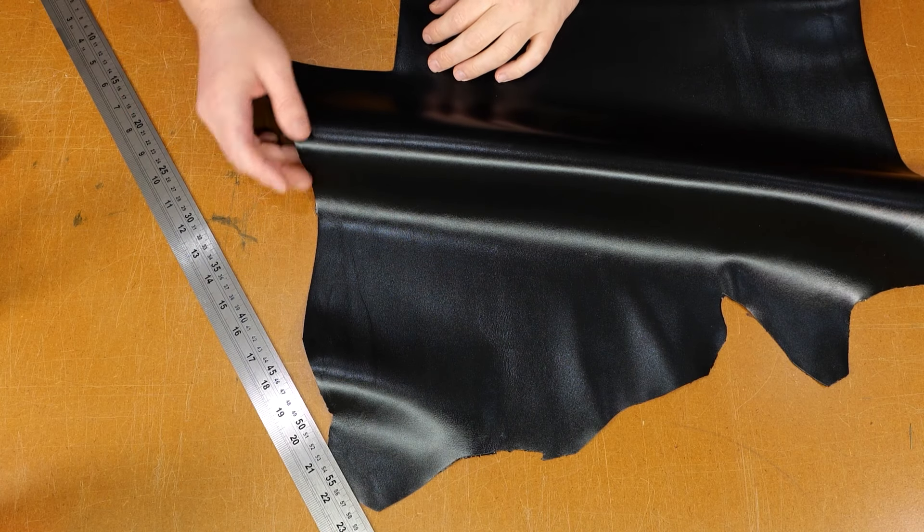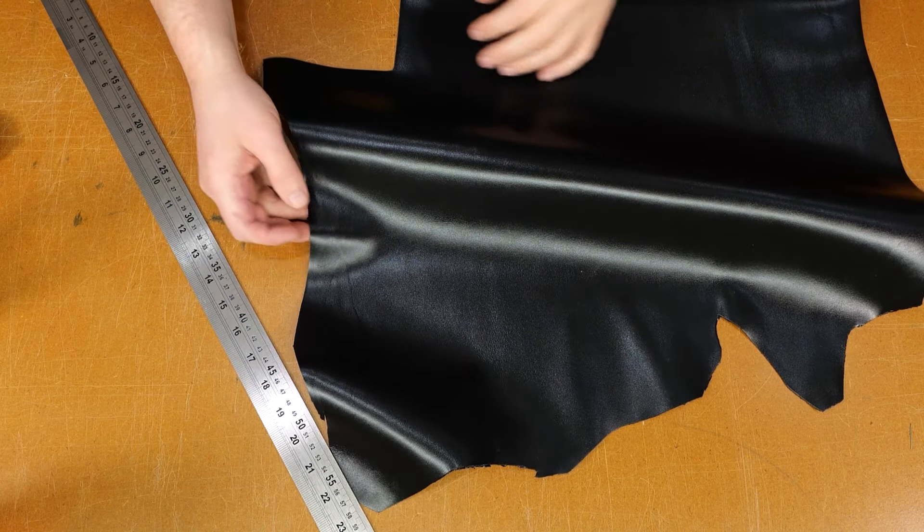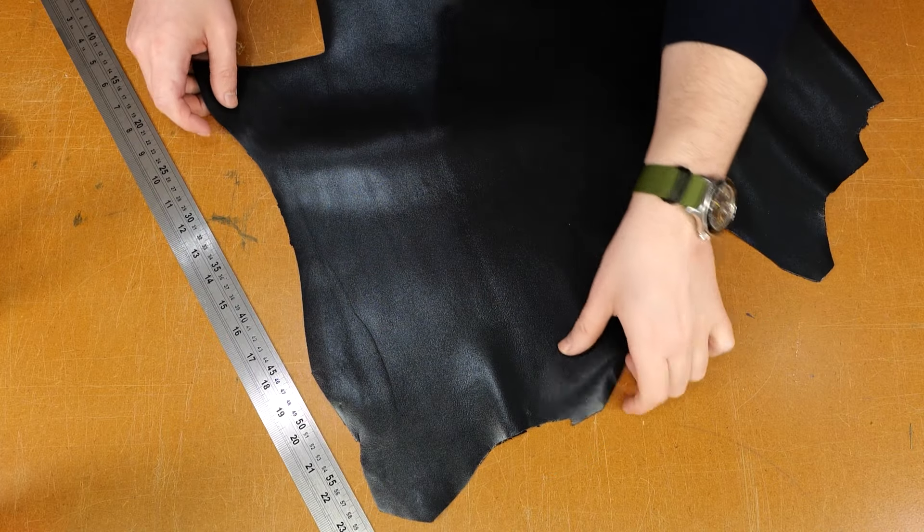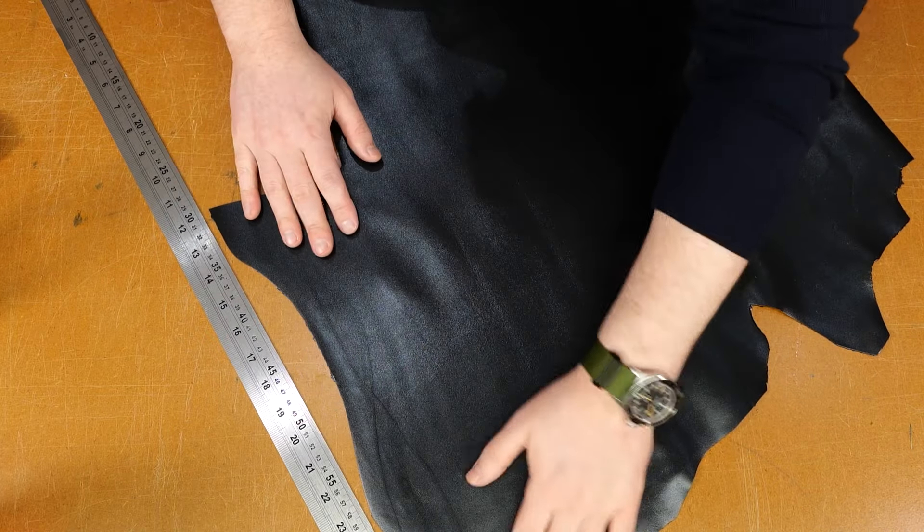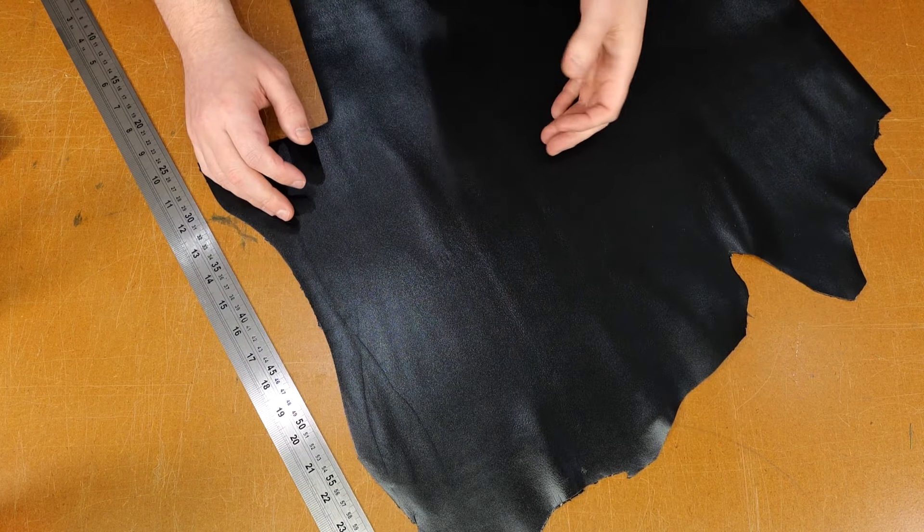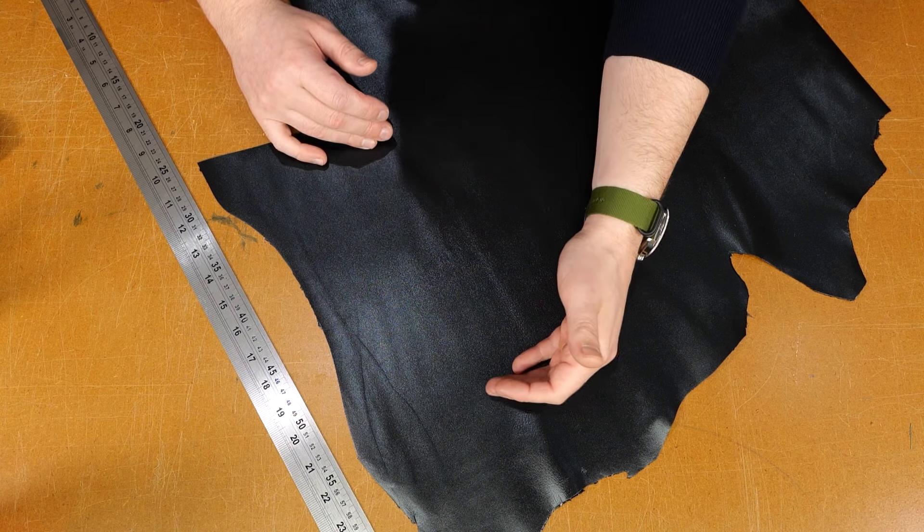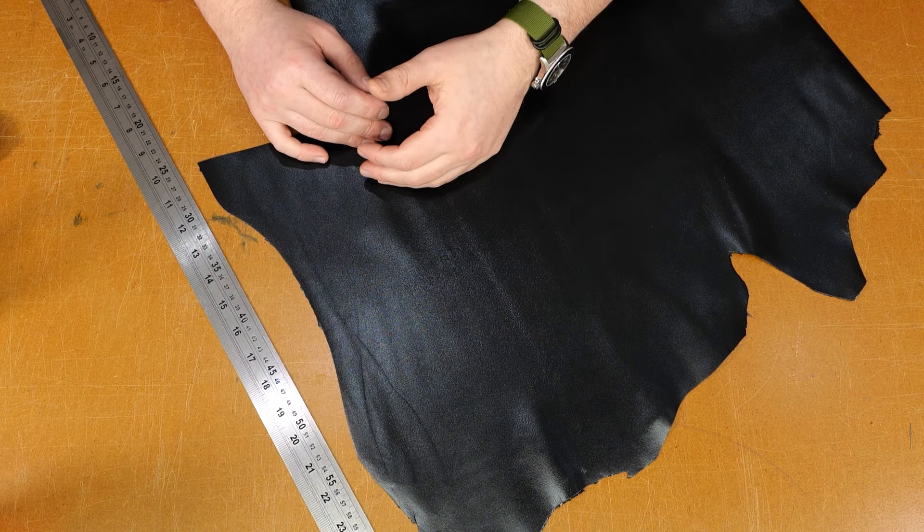We're going to cut two strips from this piece of kid's skin. I'm going to lay it flat and we want to figure out how long of a piece we actually need to start with. Everybody's wrist is going to be different. Some people are going to need a longer strap, some people are going to need a shorter strap.